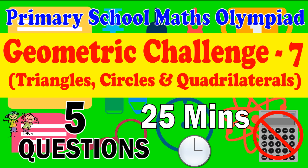Primary School Math Olympiad Geometric Challenge 7: Triangles, Circles and Quadrilaterals. This is a challenge for Primary School Math Olympiad for questions related to geometry with mixtures of triangles, circles and quadrilaterals. There are five questions. The challenge is to complete them within 25 minutes.